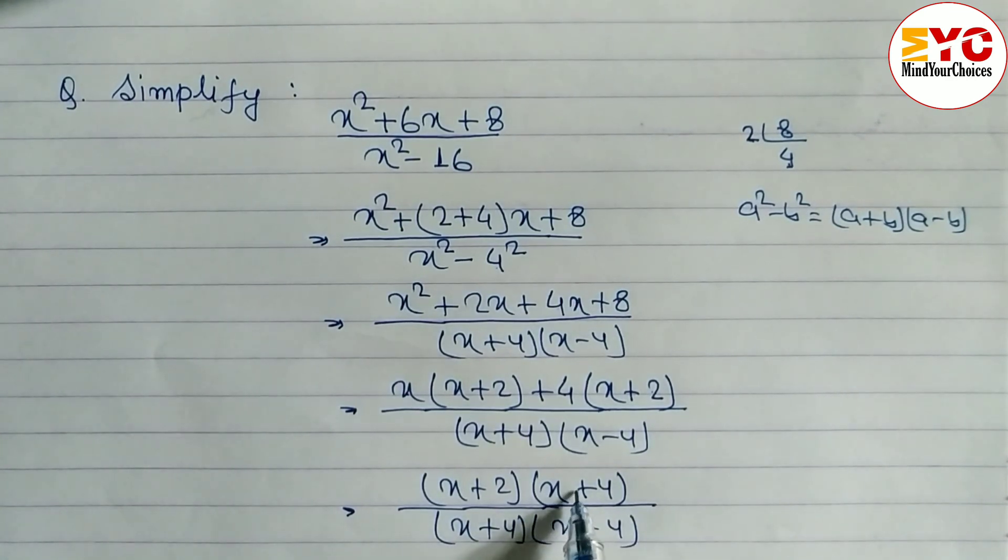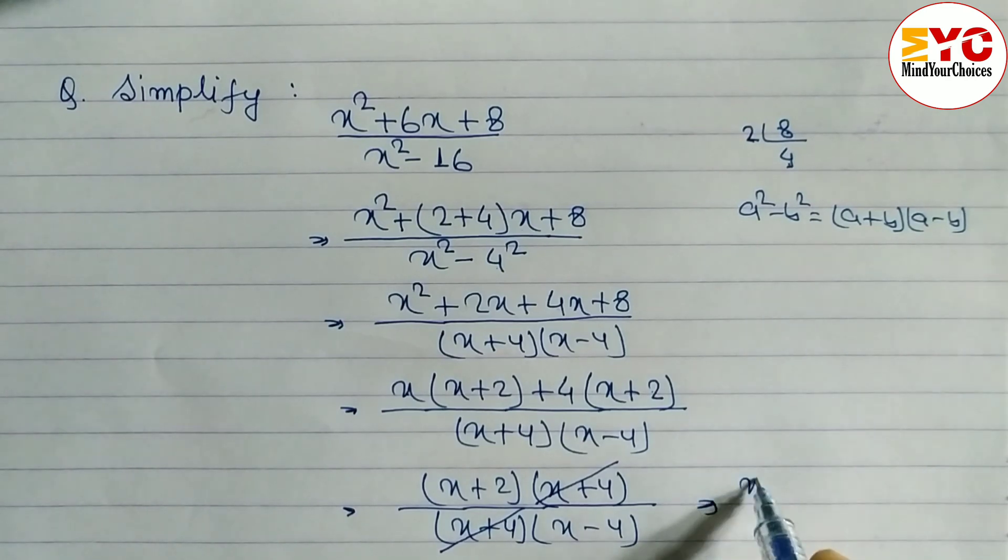Now you can see here x + 4 in the numerator and x + 4 in the denominator also, so we can eliminate, we can reduce this. And what is the remaining here? (x+2)/(x-4) is the answer.